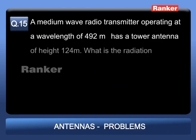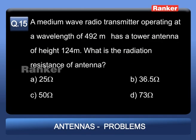Problem 15: A medium-wave radio transmitter operating at a wavelength of 492 m has a tower antenna of height 124 m. What is the radiation resistance of the antenna? Options: A: 25 Ω; B: 36.5 Ω; C: 50 Ω; D: 73 Ω.